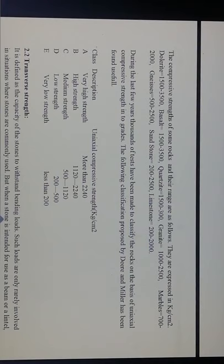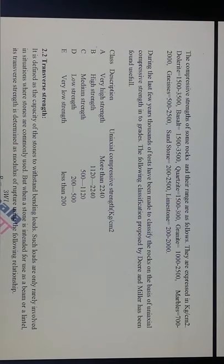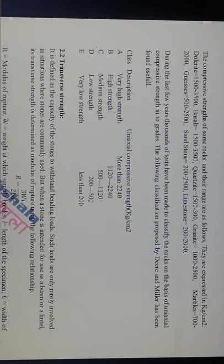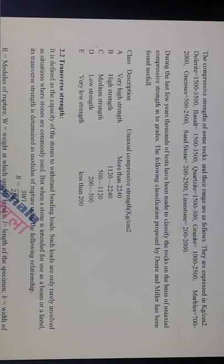During recent years, thousands of tests have been made to classify rocks on the basis of uniaxial compressive strength into grades. The classification proposed by Deere and Miller has been found most usable: Very High Strength — more than 2240 kg/cm²; High Strength — 1120 to 2250 kg/cm²; Medium Strength — 500 to 1120 kg/cm²; Low Strength — 200 to 500 kg/cm²; Very Low Strength — less than 200 kg/cm².